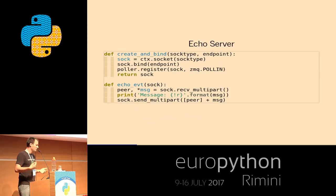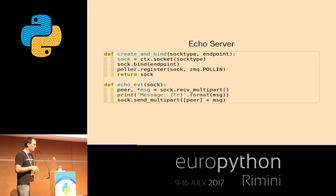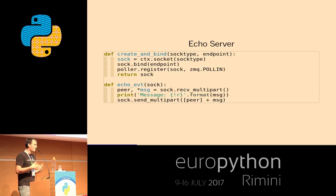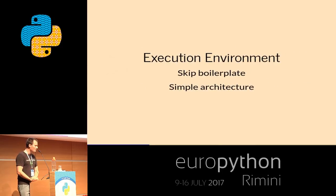Here are the helper functions. Create and bind just creates a socket and binds it so we can actually receive connections, and we register it into the poller. The handler is where the actual work happens — we receive the message, with a little 0MQ bookkeeping to split off the peer address, then log the message and send it back to whoever sent it to us. That's the very simple application.